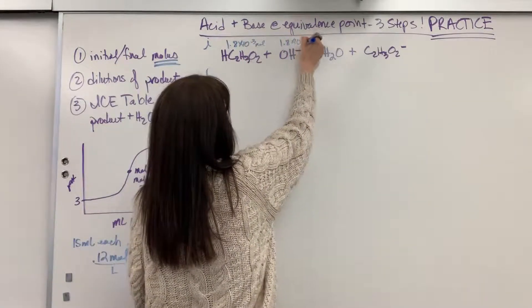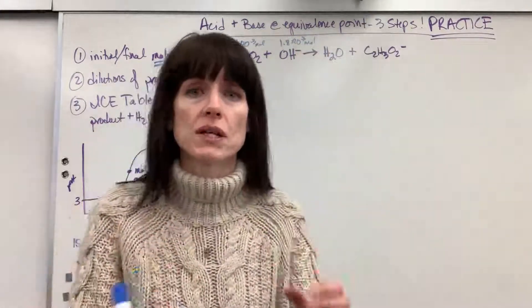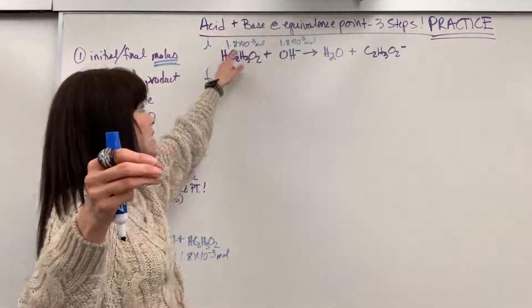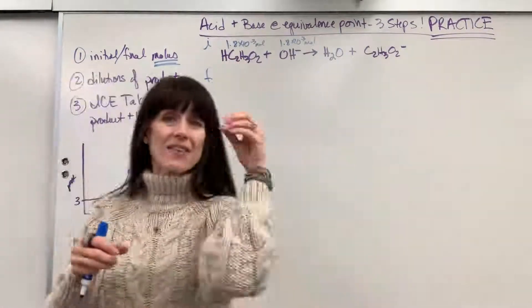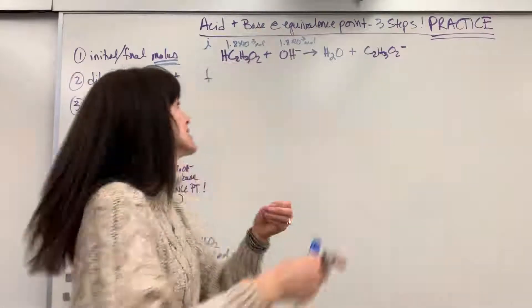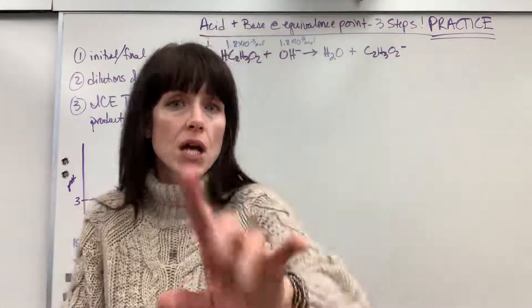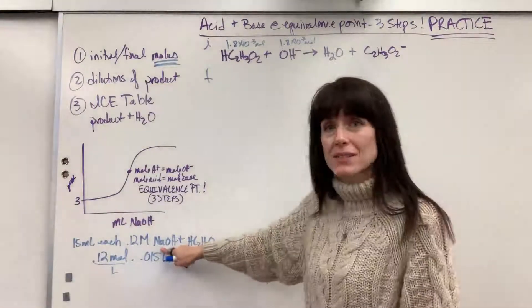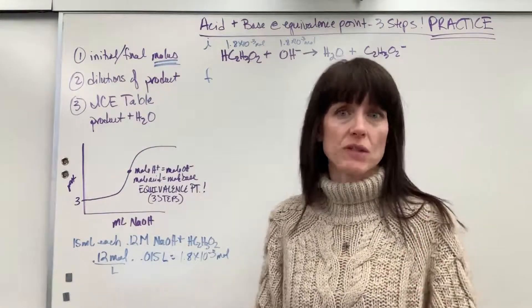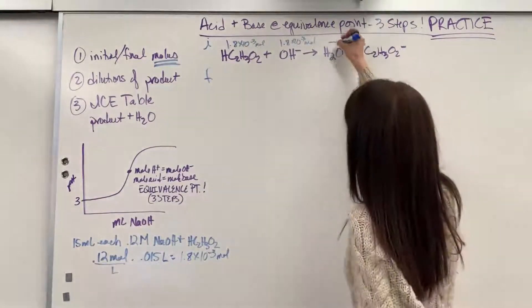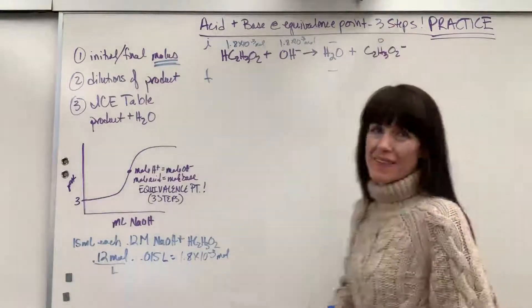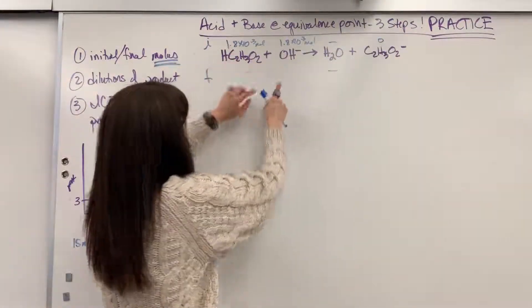I'm going to have 1.8 times 10 to the minus 3 moles of acid. 1.8 times 10 to the minus 3 moles of base. I want you to picture this. I'm going to have a little flask that has 15 mils of this 0.12 molar acetic acid. Well, inside of that is floating exactly 1.8 times 10 to the minus 3 moles of acetic acid. And then I have a second little beaker. And in this beaker, there are 15 mils of a 0.12 molar sodium hydroxide, which means I have exactly 0.18 times 10 to the minus 3 moles of hydroxide. Now, notice something I did. This is sodium hydroxide and I just wrote hydroxide. Sodium is a neutral ion and so I don't even write it in the reaction. It will not impact the pH of the solution. So I just write the hydroxide. Water is a dash. Water is not included in our equilibrium expression because it's a liquid. And I have 0 of the acetate ion that's produced.